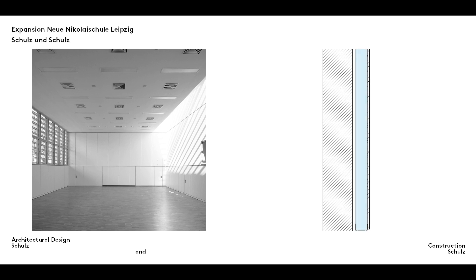A plasterboard wall installed to cover the shell wall structure and conceal service cables and pipes, for example, is known as a plasterboard facing. The interior surface of such walls is painted.